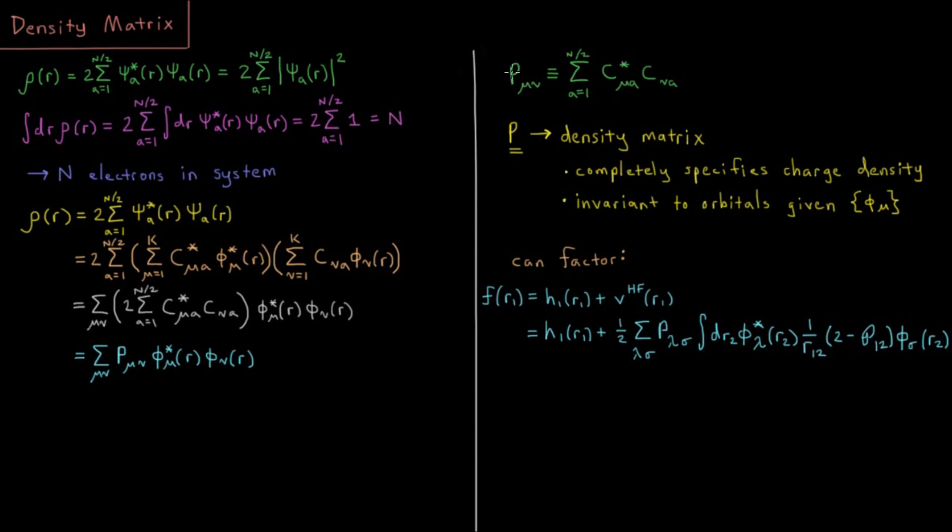Basically the density matrix, each element in that matrix, is going to be the sum over all of our occupied spatial orbitals of these two columns or rows inside of our coefficient matrix of all of our orbitals.